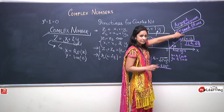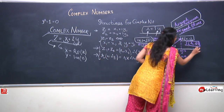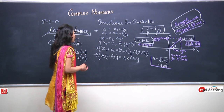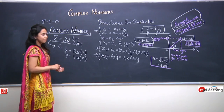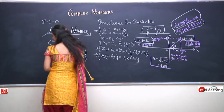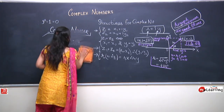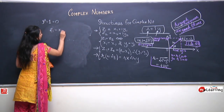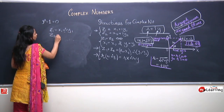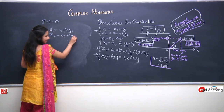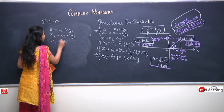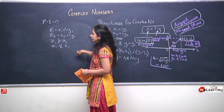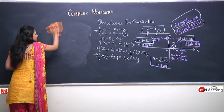We can represent complex number z in polar form (r, θ) where r is always positive. One more thing: we have defined equality of two complex numbers, but we cannot define an order of two complex numbers. That is, if z₁ = x₁ + iy₁ and z₂ = x₂ + iy₂, we can never say z₁ > z₂ or z₁ < z₂ the way we used to in real numbers.